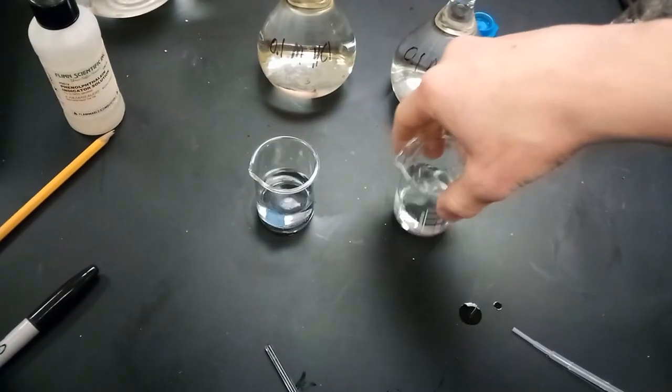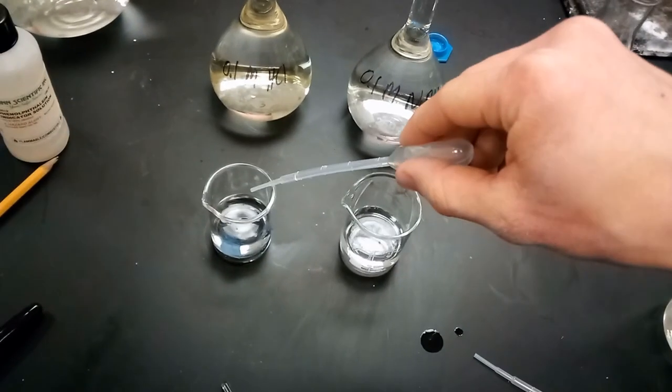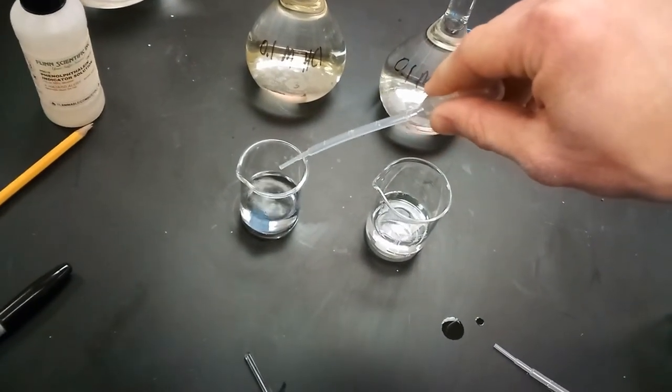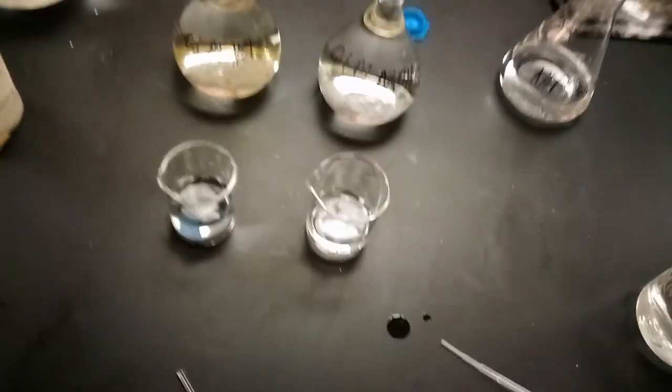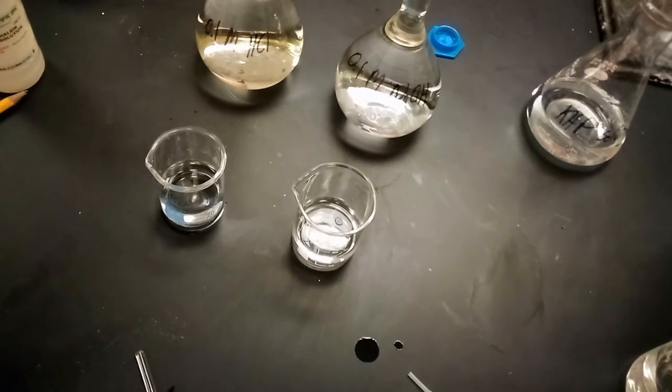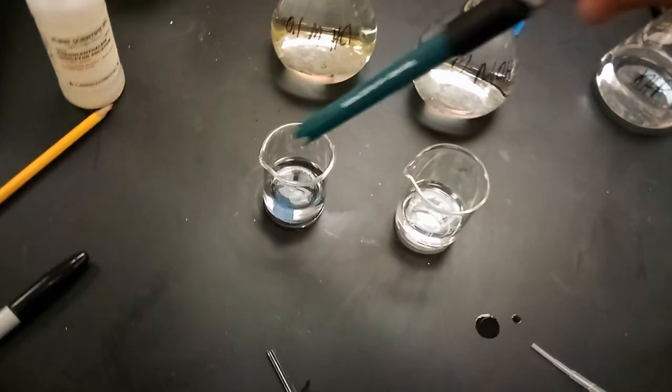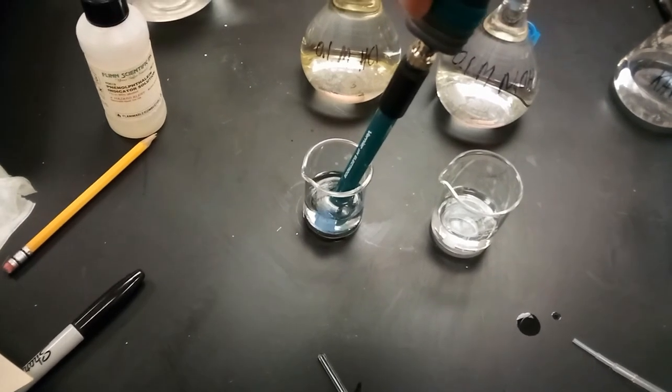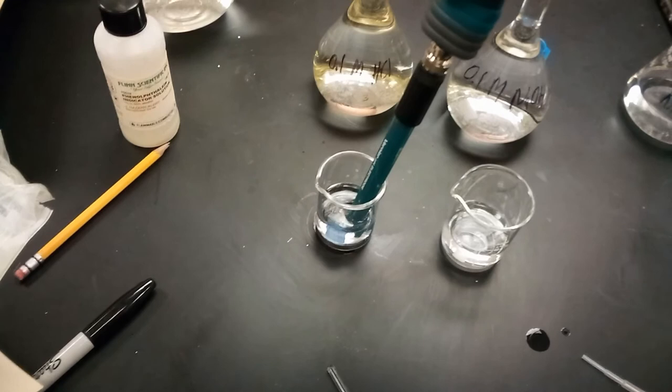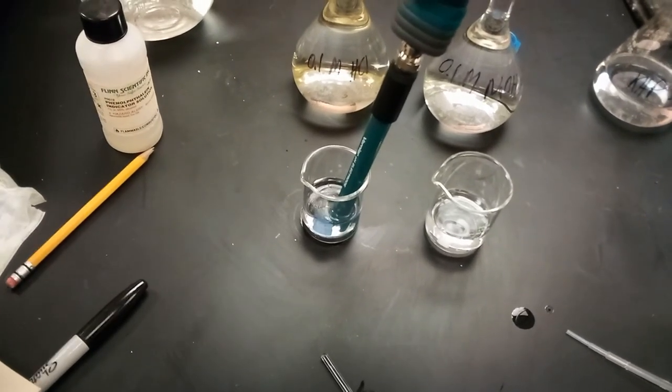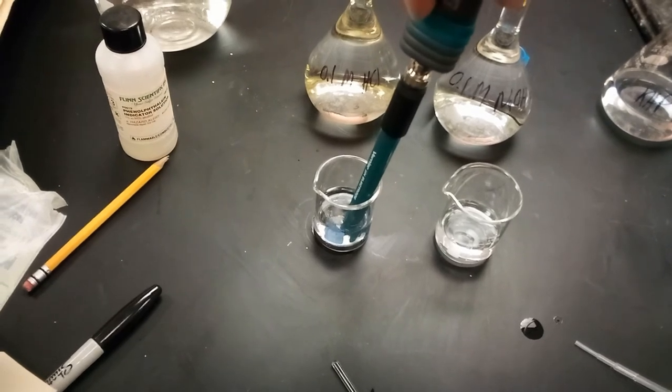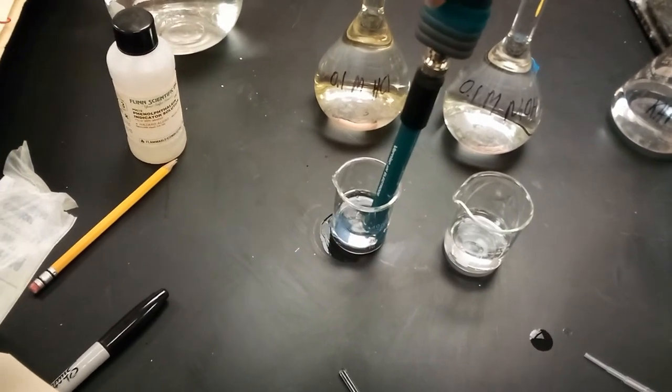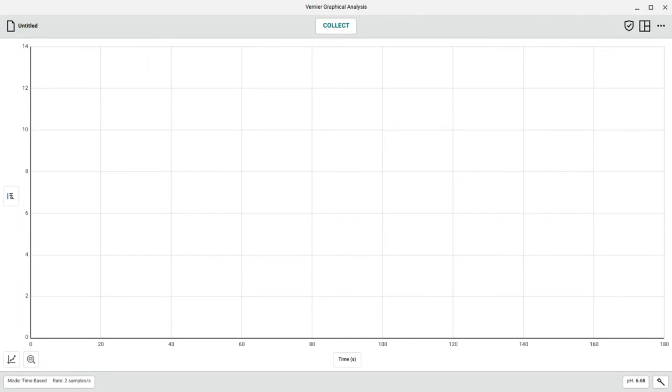So I've switched the beakers out for beakers of distilled water. Again, we'll be adding five drops of 0.1 molar HCl. And then using the pH electrode like so, we'll put it in there and see what has changed, if the pH level has changed more drastically in this instance now that we're not using the buffer. Hopefully you can notice a much more significant change in pH from the pH of the water to the pH after addition of the hydrochloric acid.